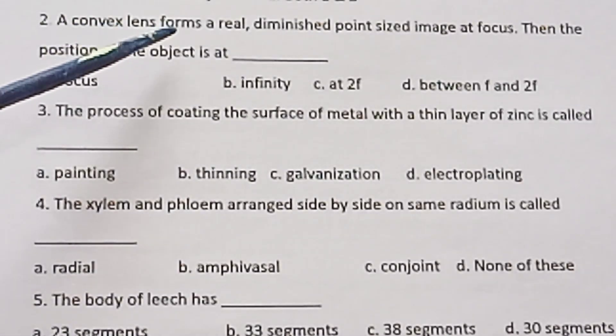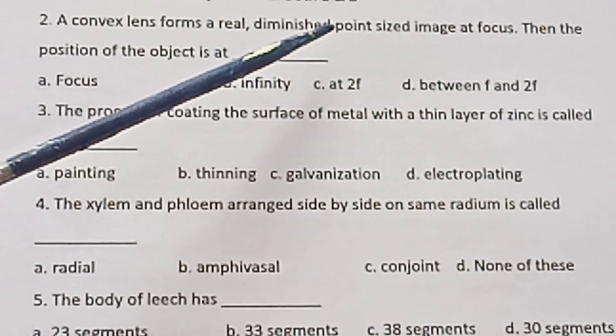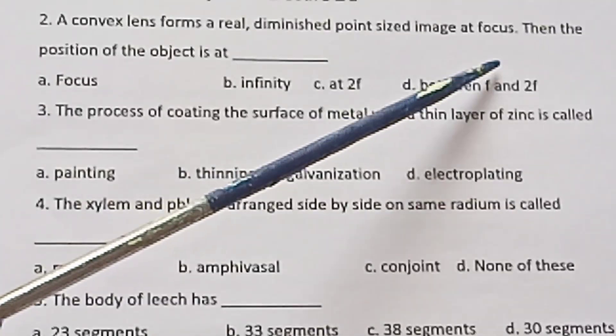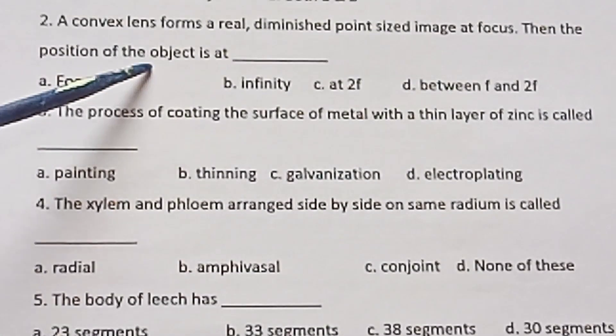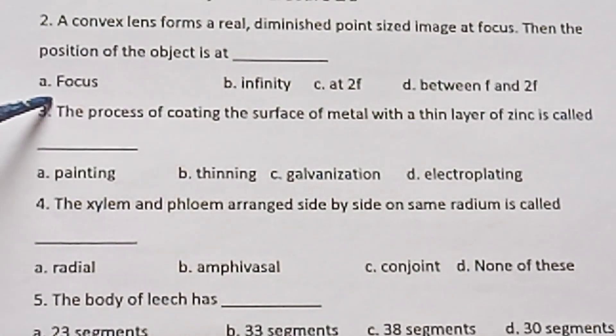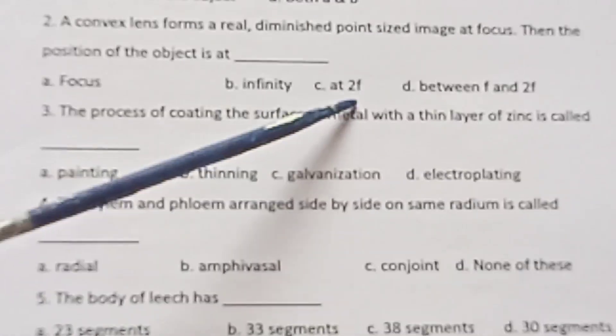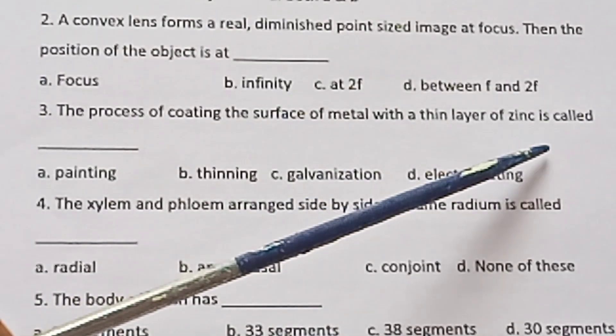Second one, a convex lens forms a real diminished point sized image at focus. Then the position of the object is at focus, infinity, at 2F, between F and 2F.